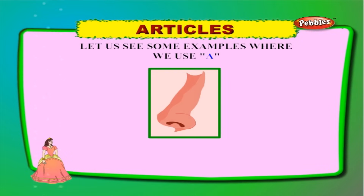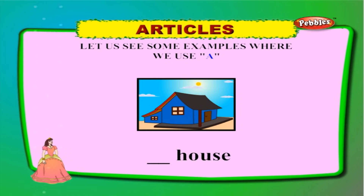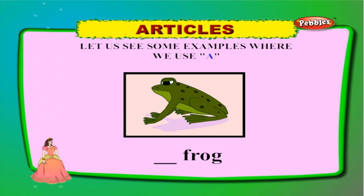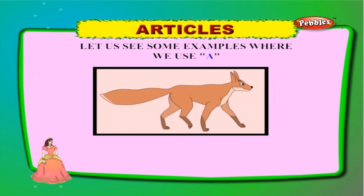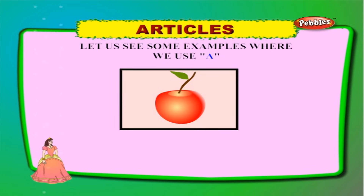Now let us see some examples where we use 'a'. 'A nose' — 'N' is a consonant, so we use 'a'. 'A house' — 'H' is a consonant, so we use 'a'. 'A frog' — 'F' is a consonant, so we use 'a'. 'A fox' — 'F' is a consonant, so we use 'a'. 'A pair' — 'P' is a consonant, so we use 'a'.